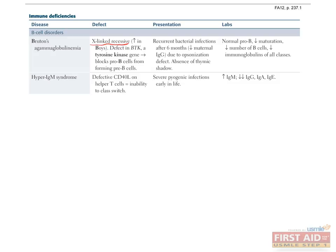Hyper-IgM syndrome is characterized by a defect in the CD4 ligand of helper T cells, resulting in an inability of B cells to undergo class switching. As a result, one sees elevated levels of IgM, as expected from the name, but also depressed levels of IgG, IgA, and IgE. Clinically, this condition presents as severe pyogenic infections early in life.